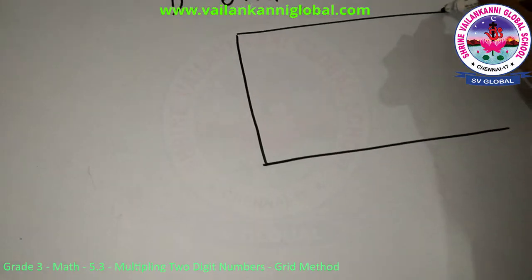In this video, we are going to learn how we can multiply two digit numbers using grid method. So we have to multiply 6 and 47. So for that, I am going to draw a small grid like this in the form of a rectangle.